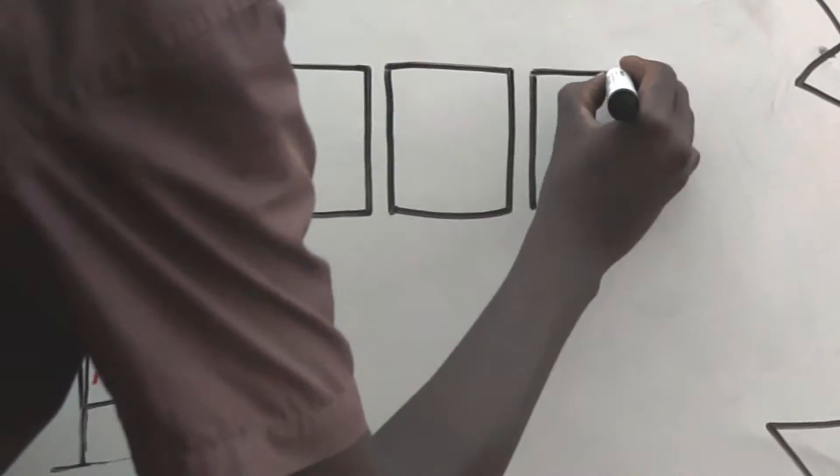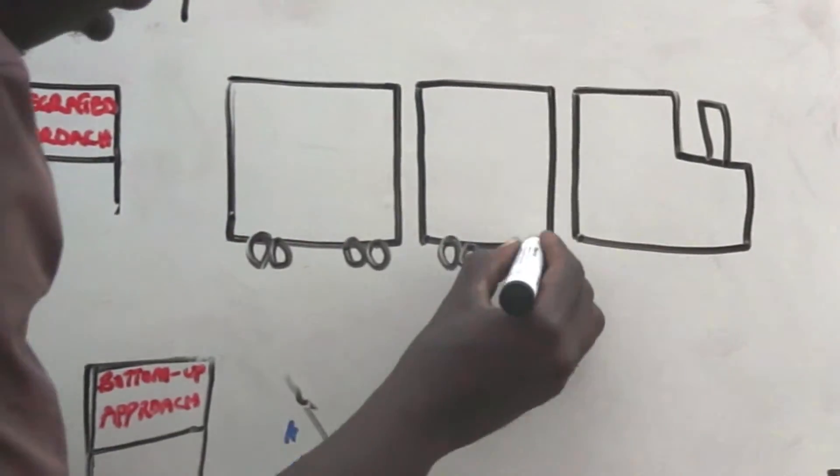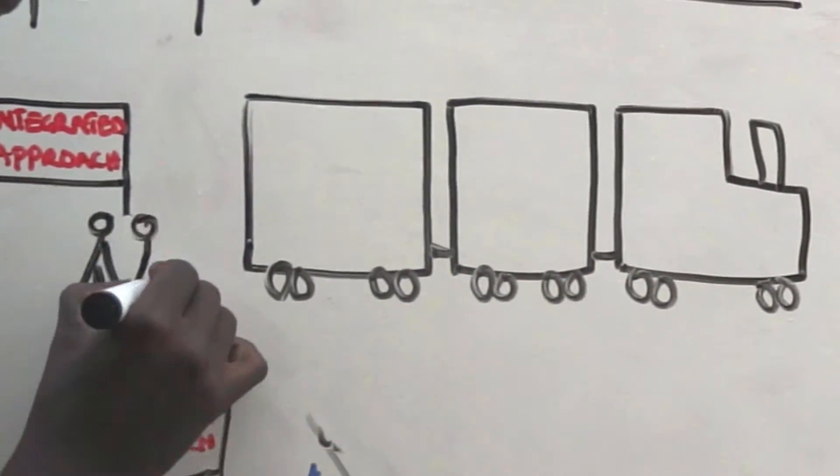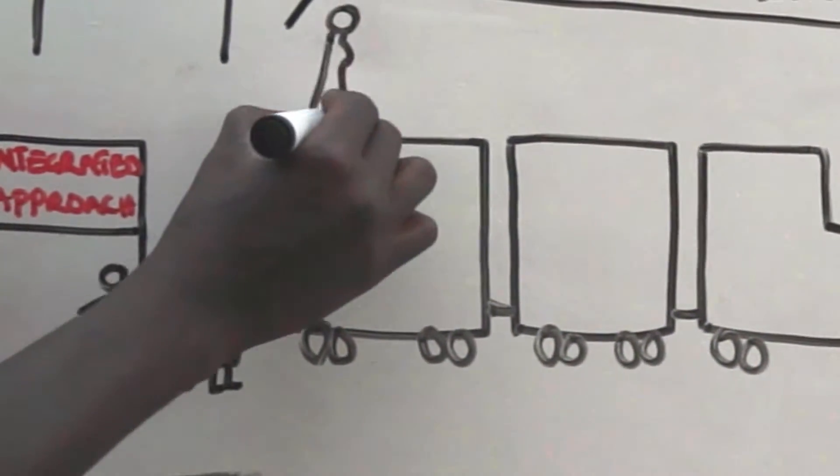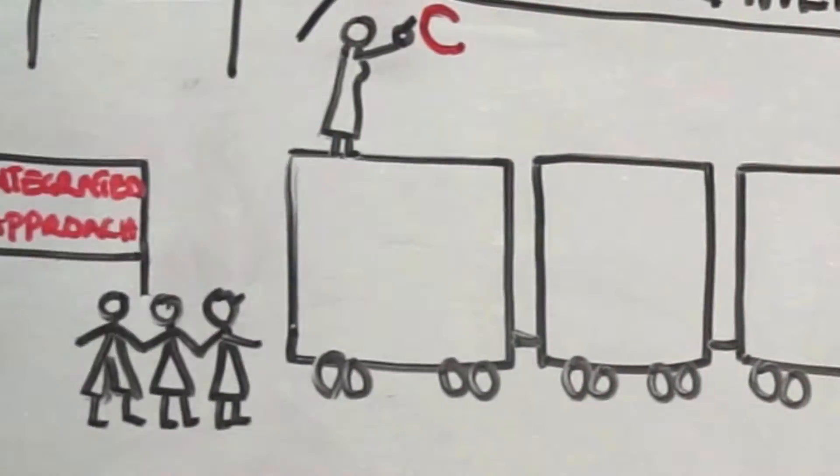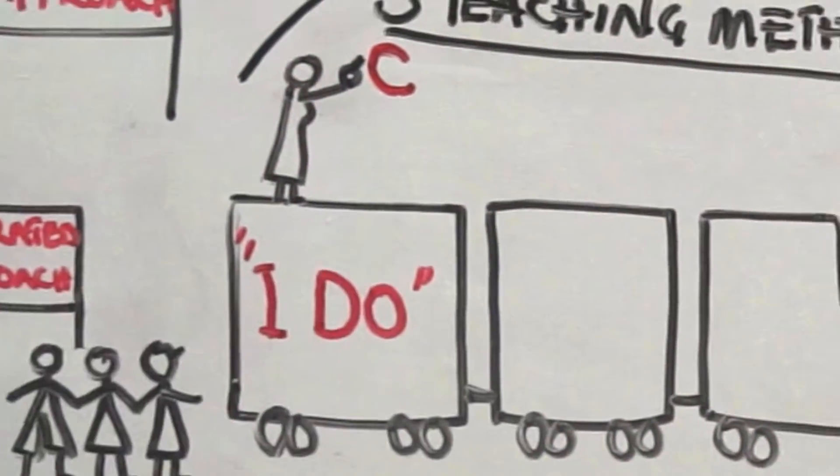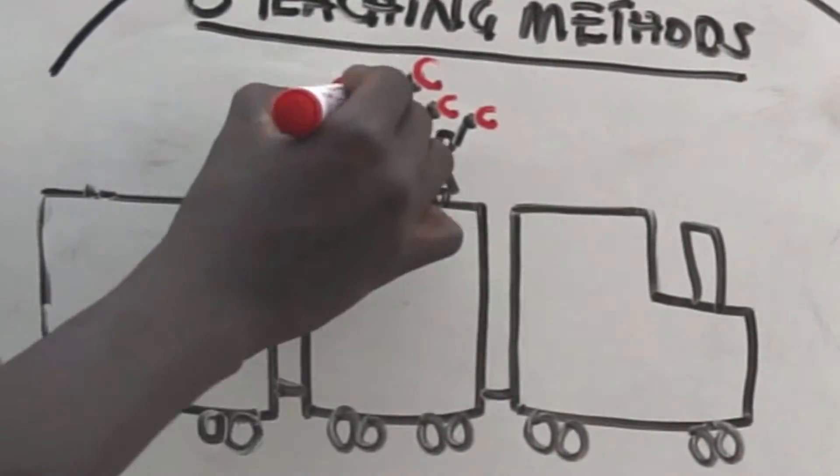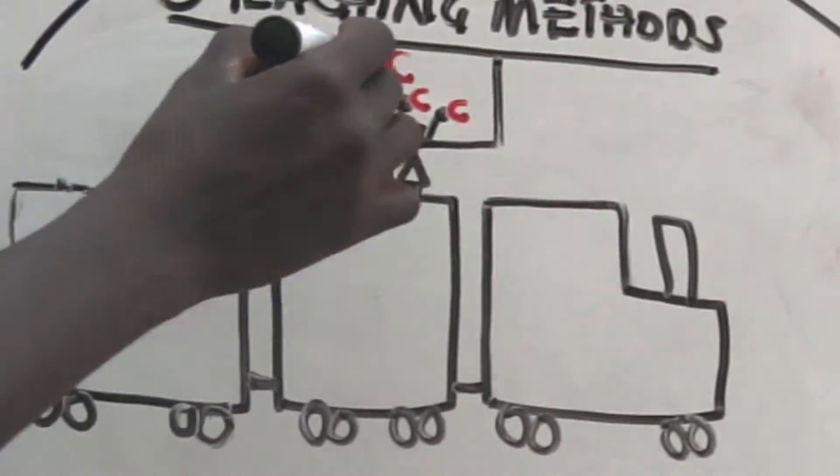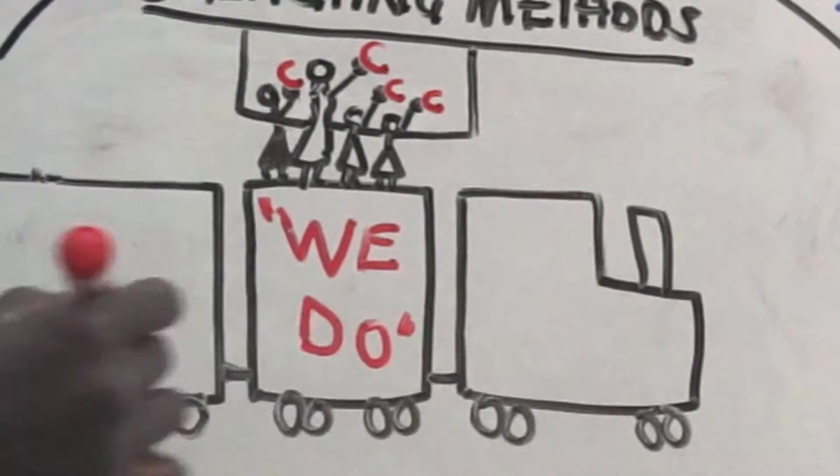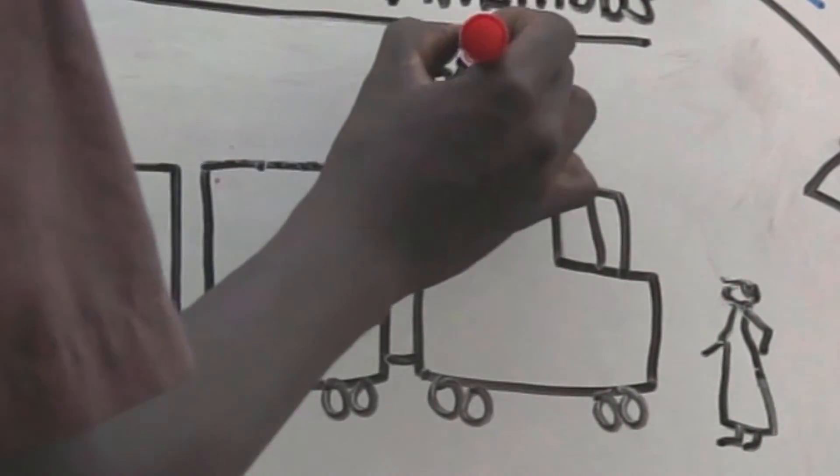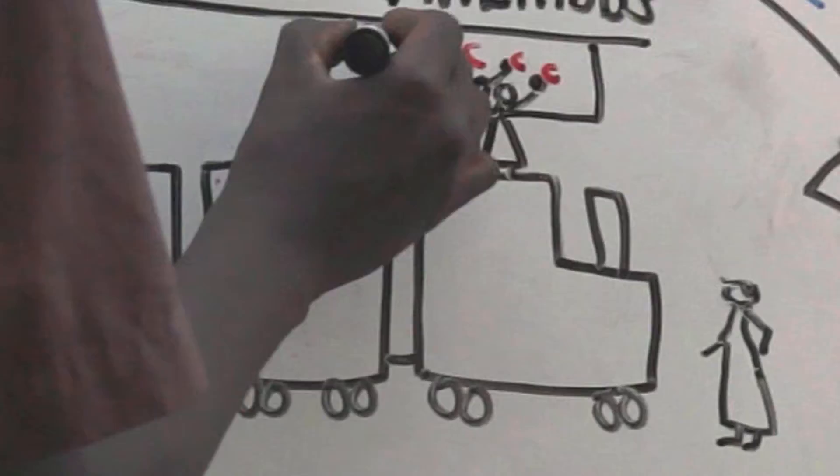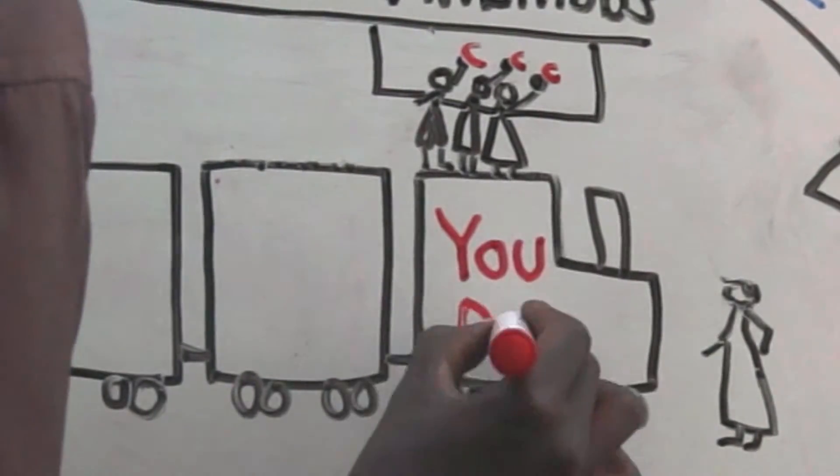Method two we call I do, we do, you do. In our model, the teacher always demonstrates for children how to do the steps in a task they will be expected to perform. I do. Next, the teacher asks the pupils to do the task with her. We do. Finally, the teacher asks the pupils, as a group or individually, to perform the task on their own. You do.